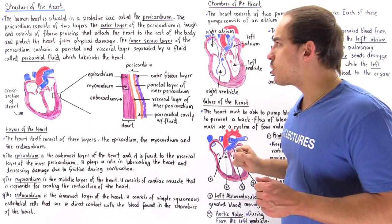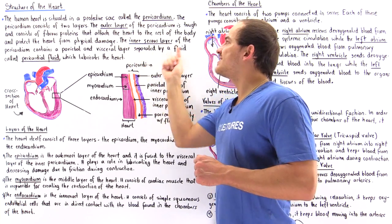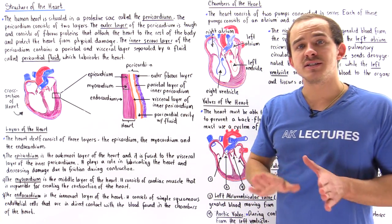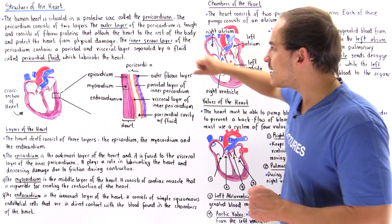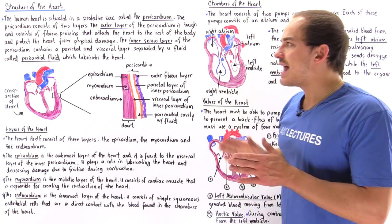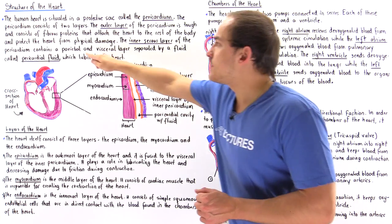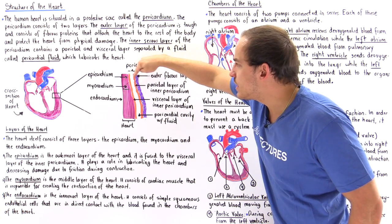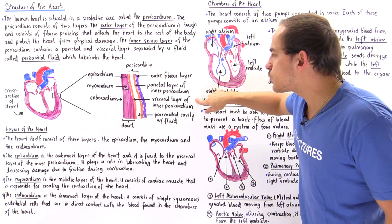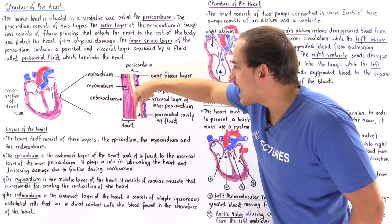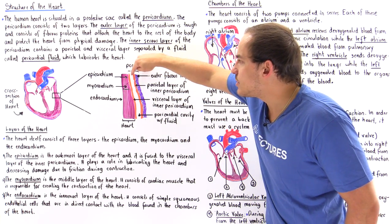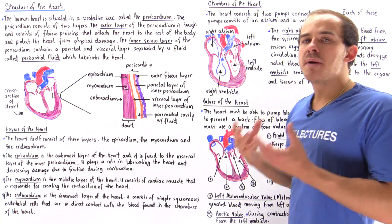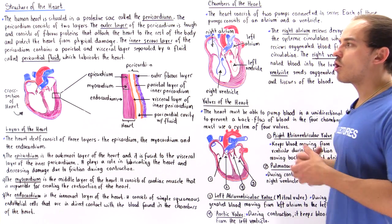The inner portion of the pericardium is also known as the inner serous layer — 'serous' comes from 'serum' because this section contains a fluid that resembles serum. The inner serous layer can be subdivided into two regions: the parietal layer and the visceral layer. The space between the visceral and the parietal layer is known as the pericardial space or the pericardial cavity.